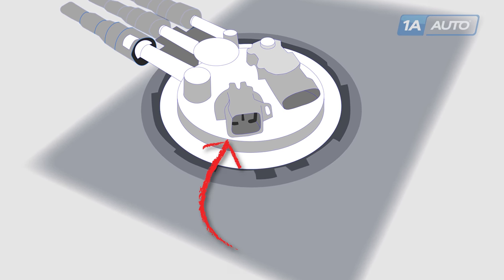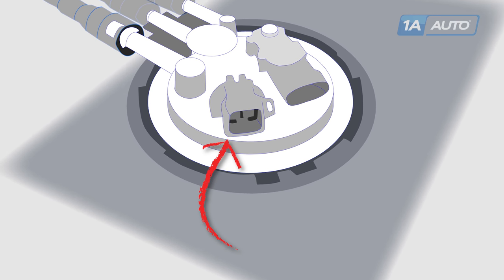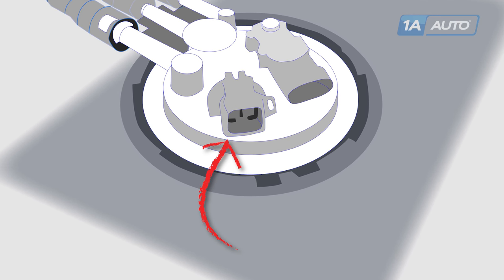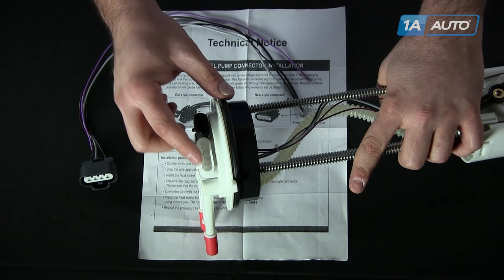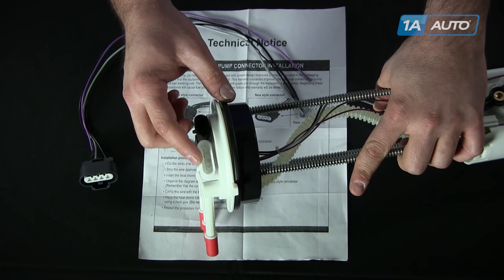So GM originally had on their fuel pumps—I'm going to show you right here—they had a square 4-pin connector, and what they decided to do was update this with a flat 4-pin connector to make it universal through a lot of their applications.